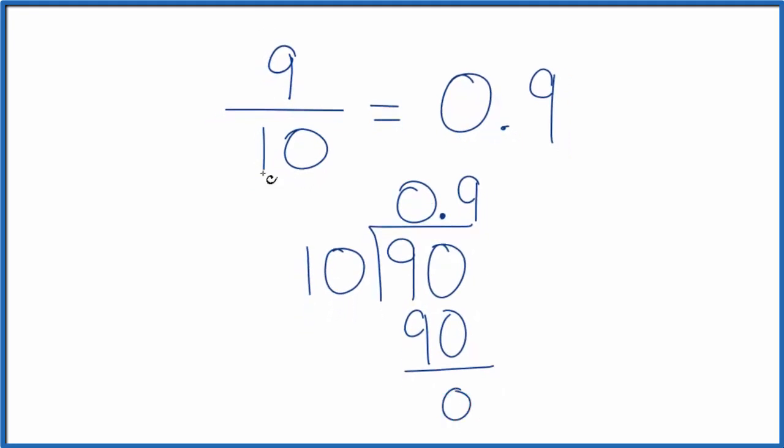So when we talk about 9 tenths as a fraction, it's equal to 0.9 as a decimal. And that's what we found on our calculator.